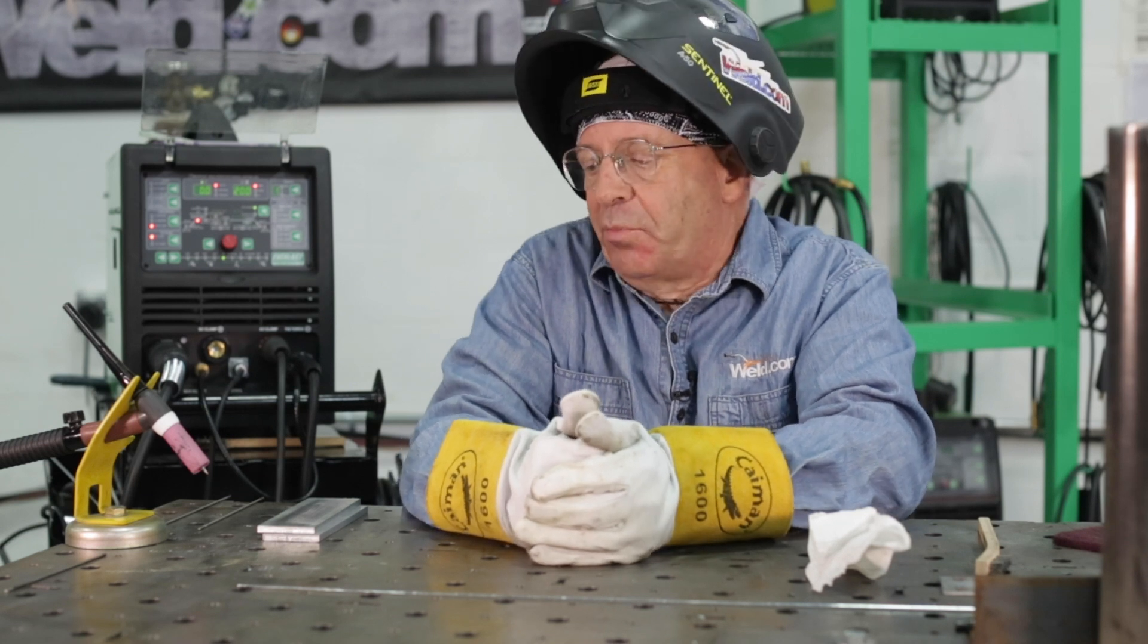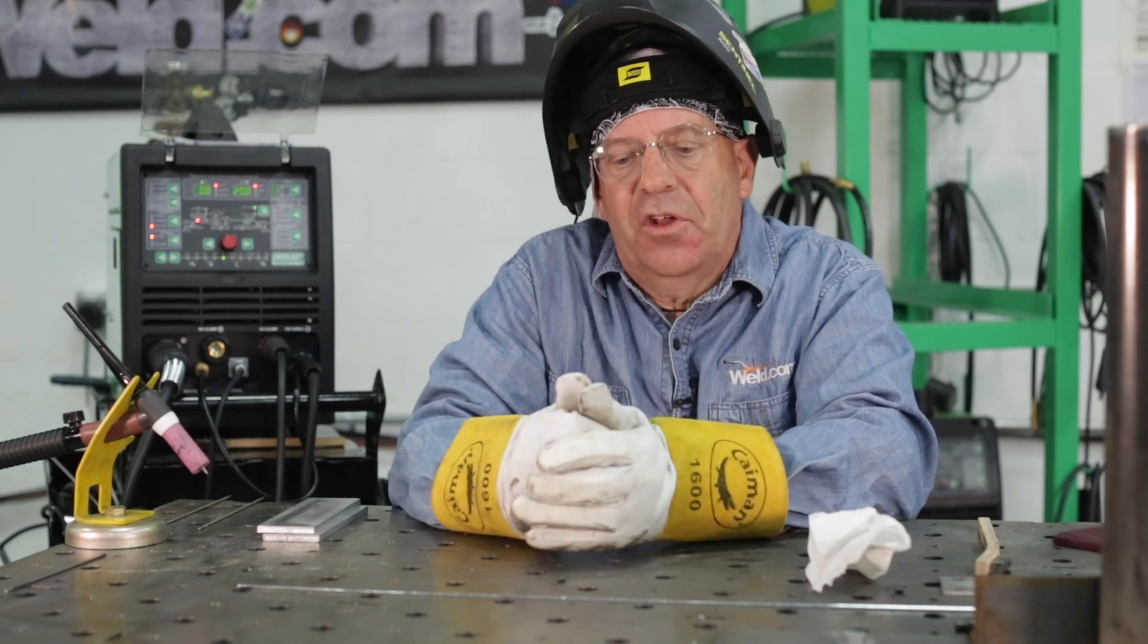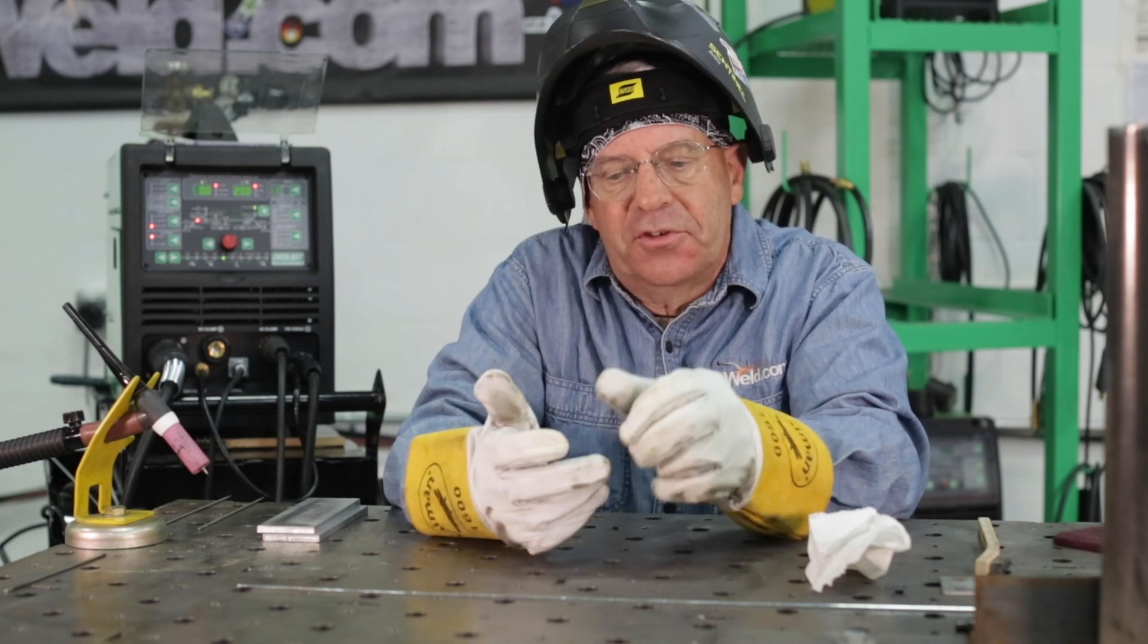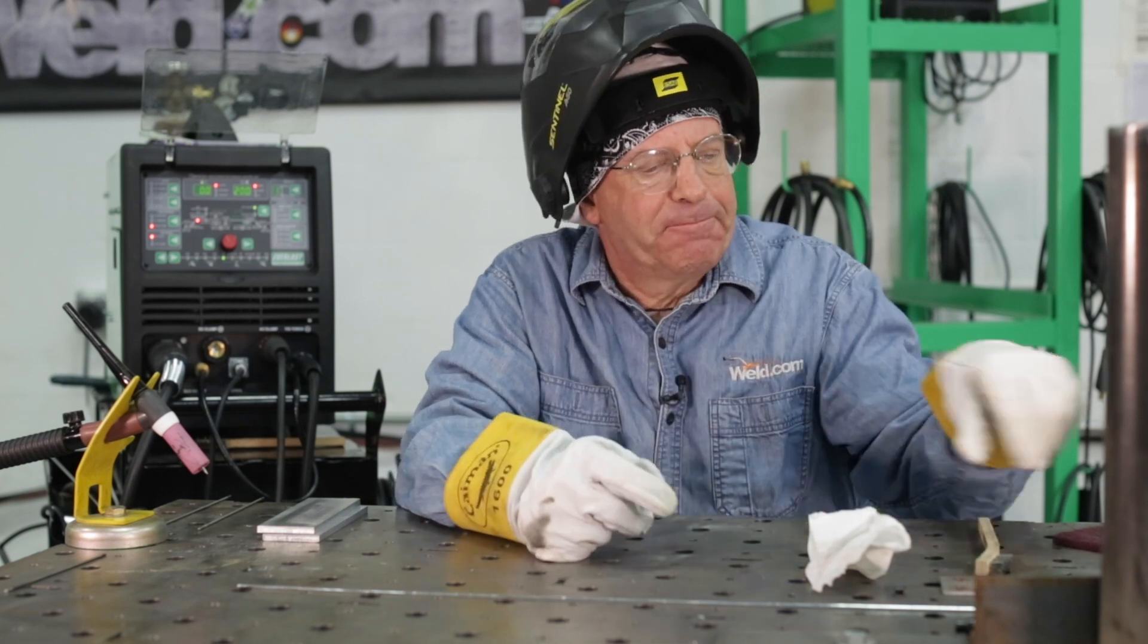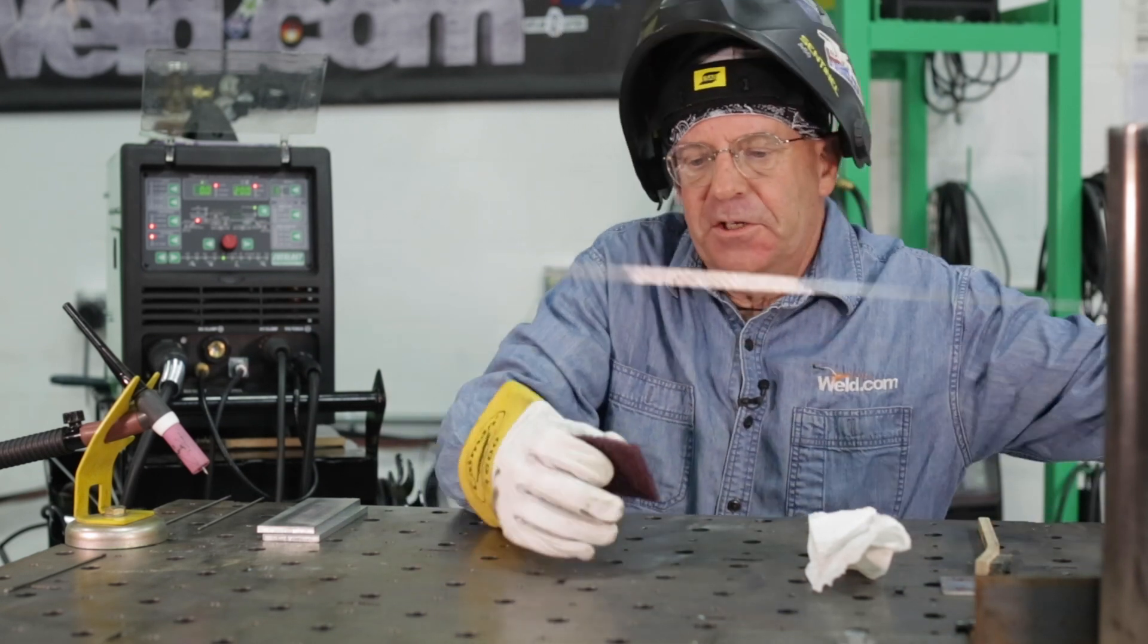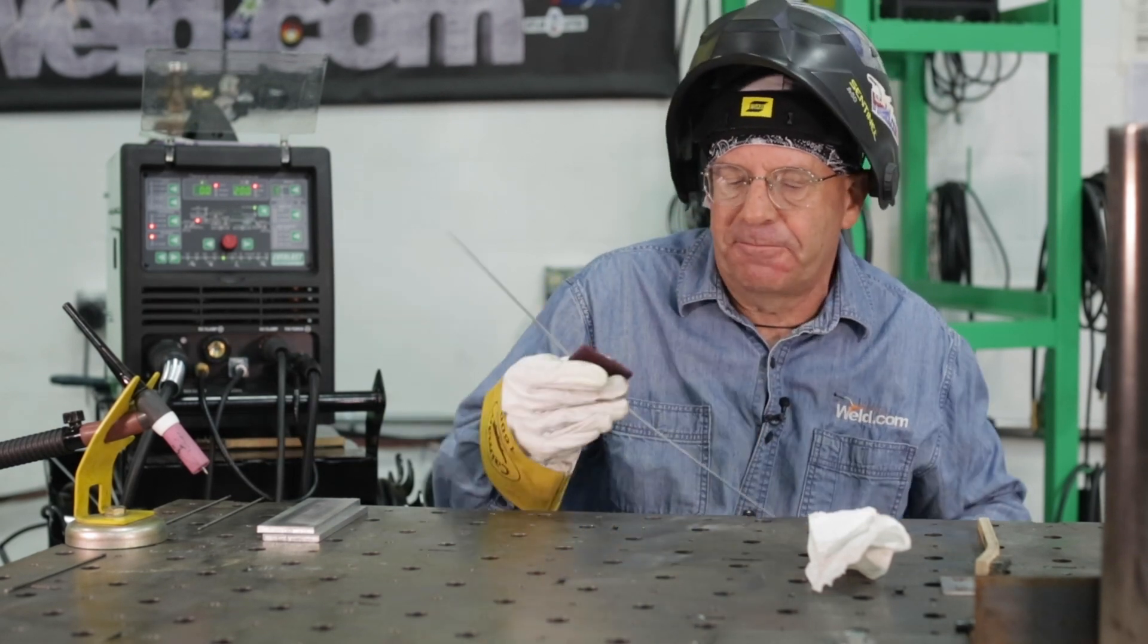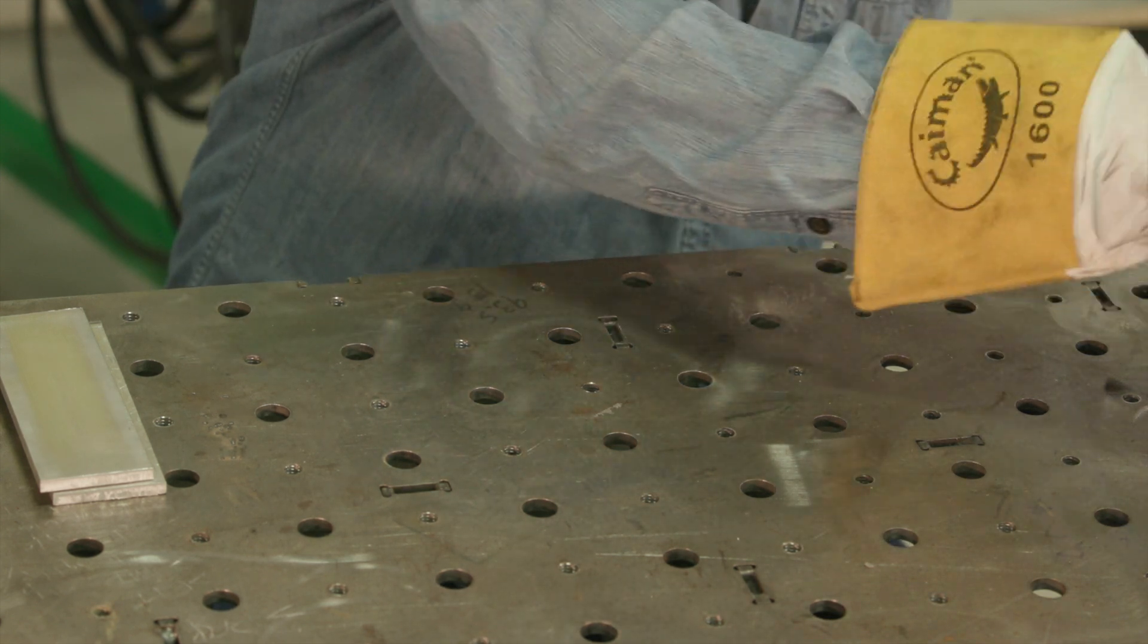So we're going to run some beads and show you how this works. Hopefully we can lay down some good looking beads. We're going to talk about the torch angle and travel speed. First thing I need to do is simply wipe this down a couple times. Grab my piece of clean material. Let's get started.